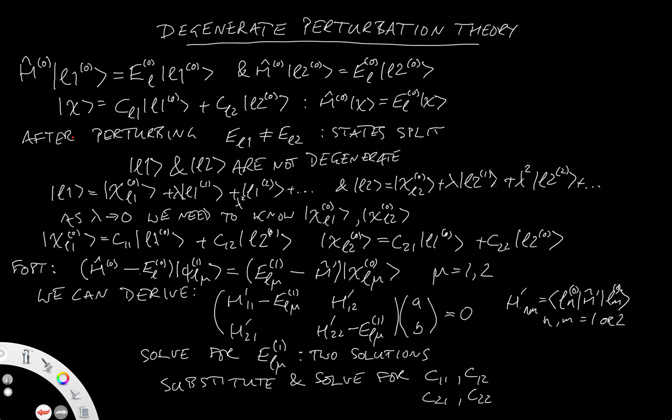I've then indicated briefly how you might find the equation, but the equation form is down here. It's H11 minus E_L_mu, H12, H21, H22 minus E_L_mu. That gives you two solutions for the energies, which then allows you to find the appropriate linear combinations. You don't need to know much more about degenerate perturbation theory at the moment. It's just an important area, an important topic to be aware of and to understand how it works.